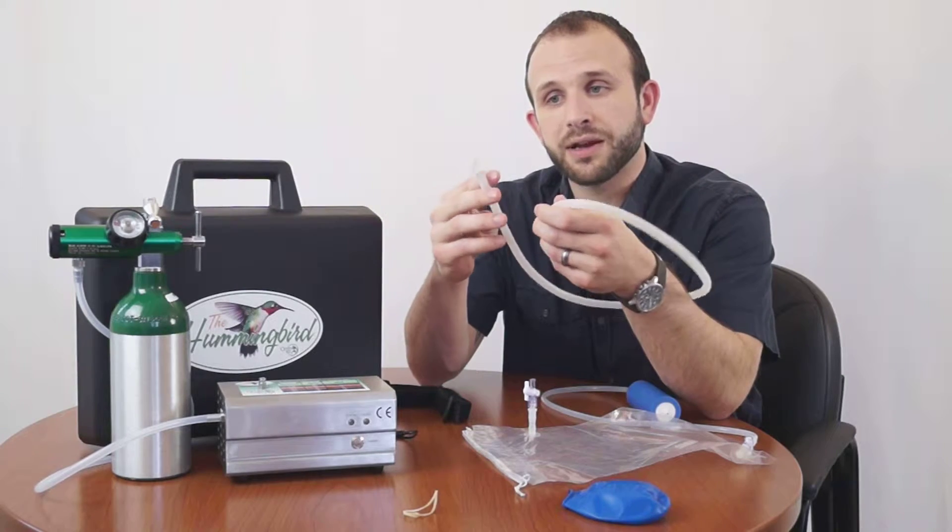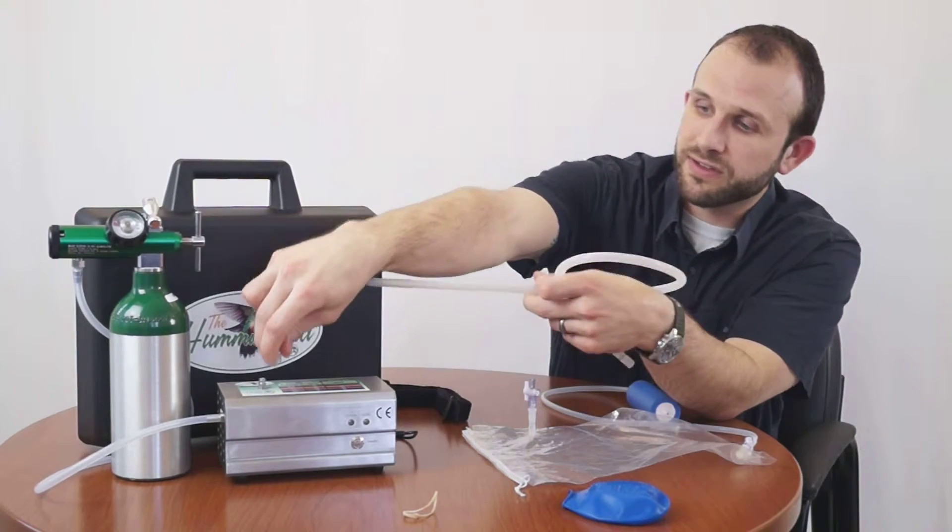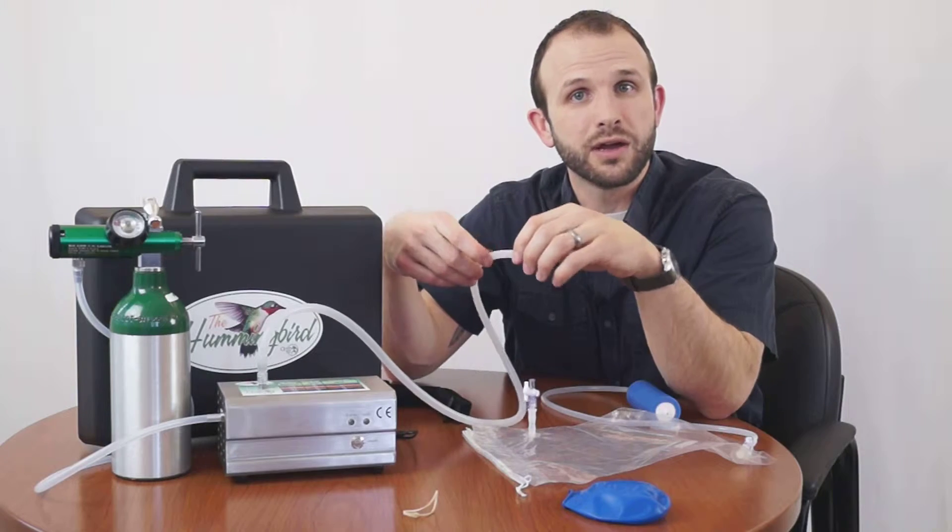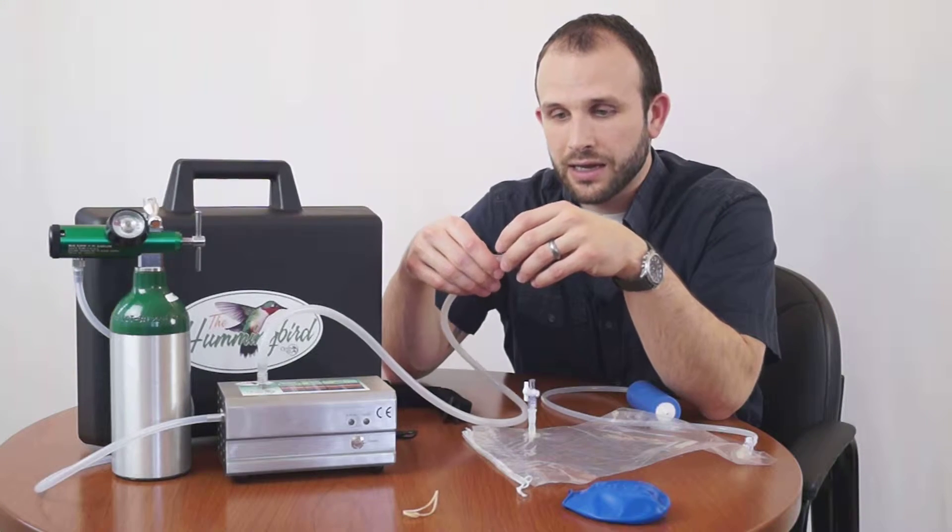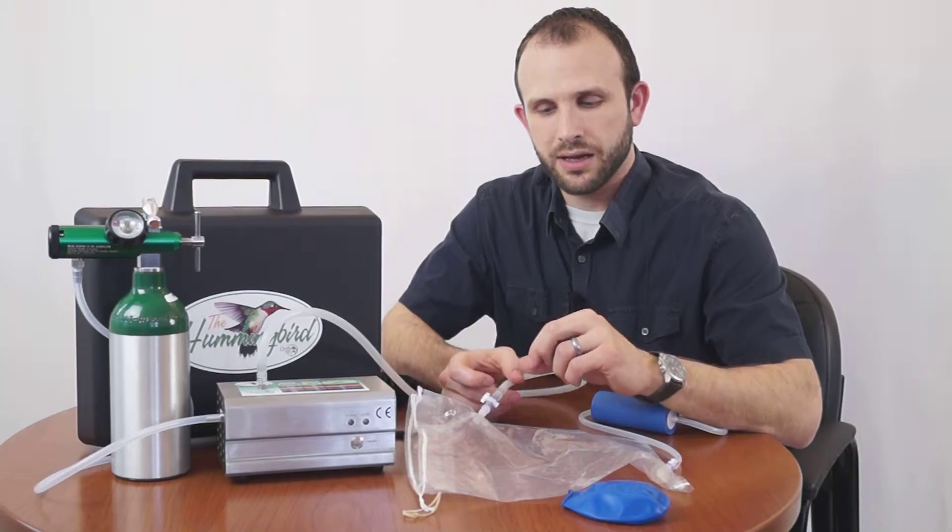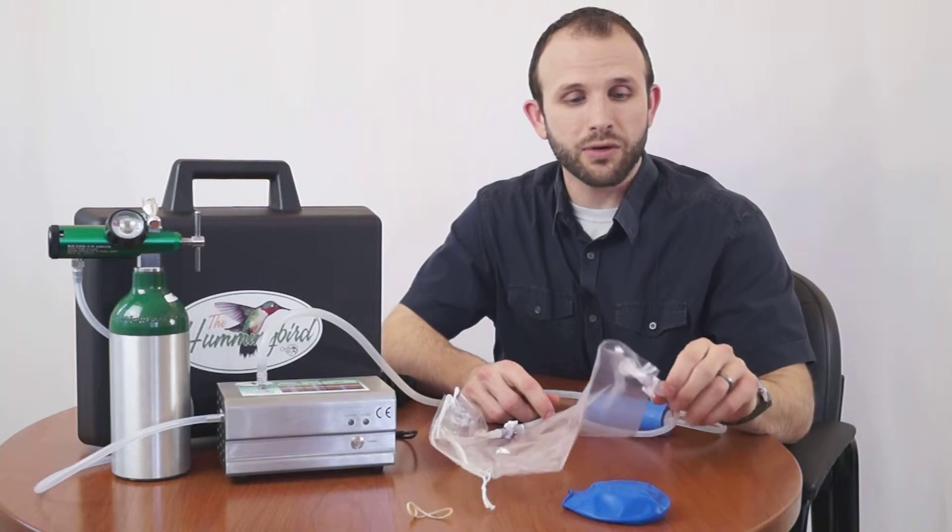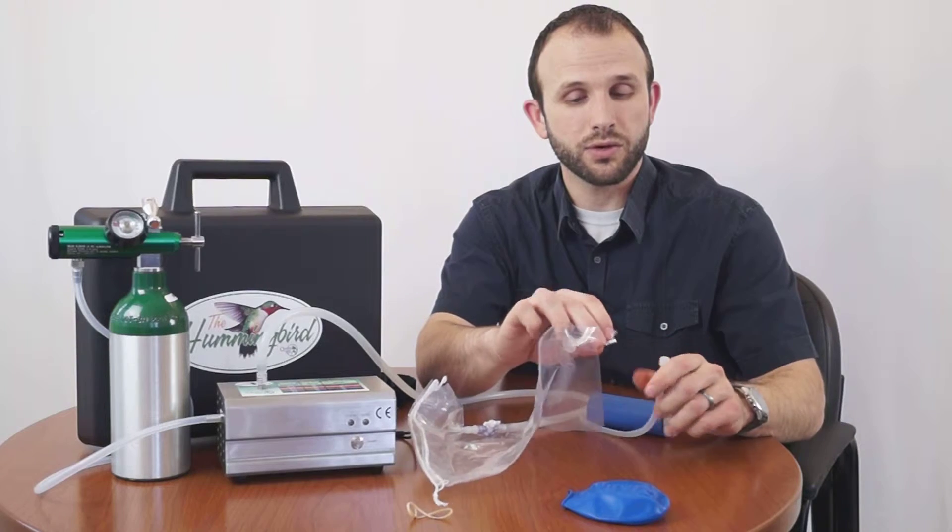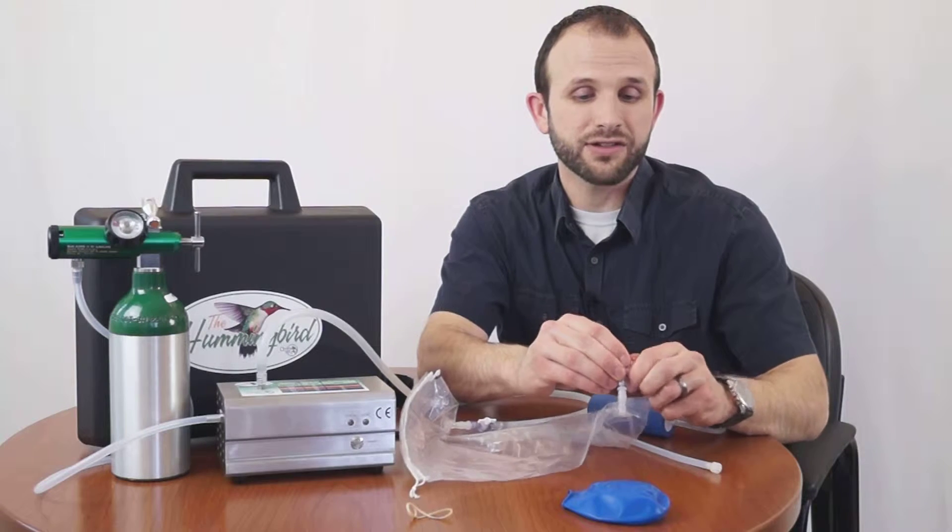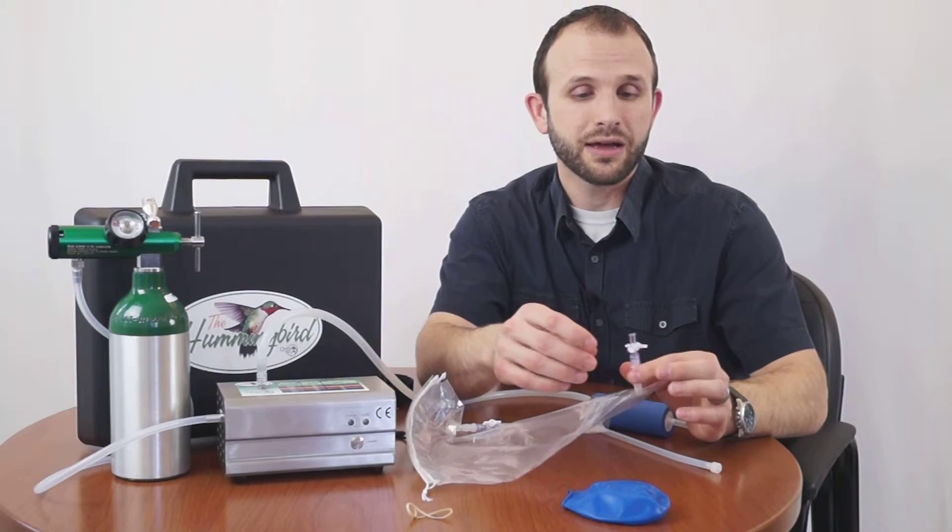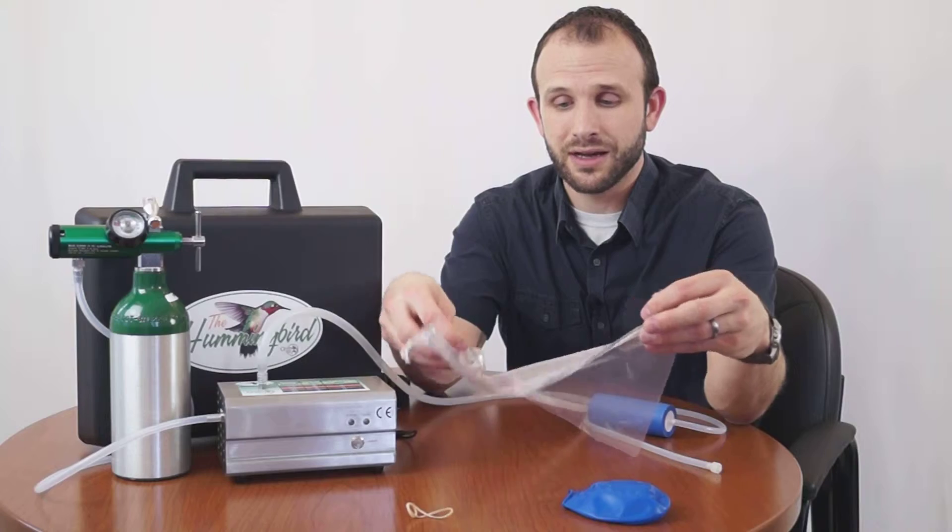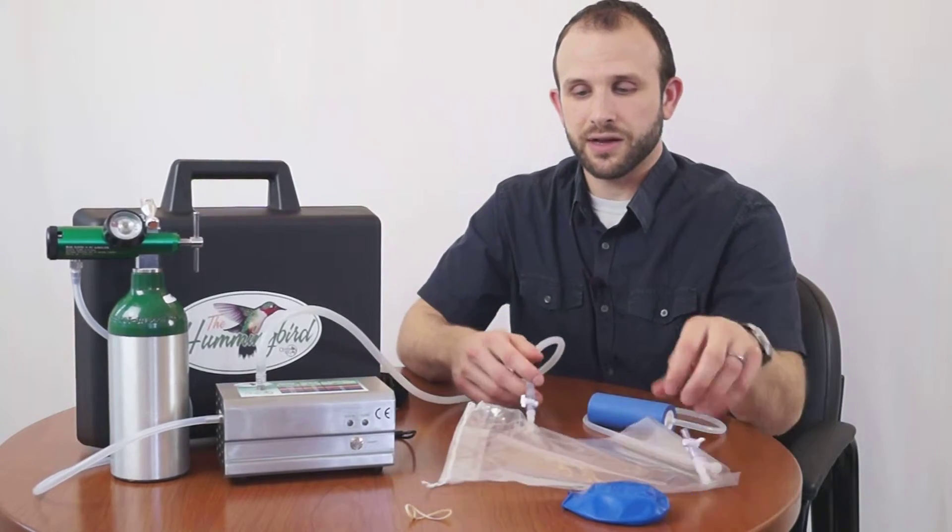What I'm going to do here is take my silicone ozone-resistant tubing and connect that directly to my Hummingbird. Now I would have had my Hummingbird, if I'm going to be treating, warming up for a minute or two before I start using it. Then I'm going to take the other end and connect it right here to the bag. I will mention that we don't actually have to connect the destruct until we're ready to end the treatment. We're going to just make sure that if we don't have our destruct connected, we're going to turn that valve off and make sure that ozone isn't flowing out as we're treating.